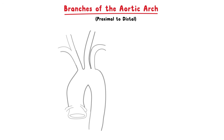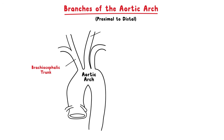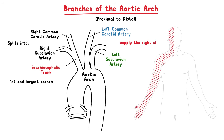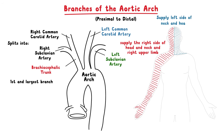There are three major branches which arise from the aortic arch. Proximal to distal, these are the brachiocephalic trunk, the left common carotid artery, and the left subclavian artery. The brachiocephalic trunk is the first and largest branch of the aortic arch; it ascends laterally and splits into the right common carotid artery and the right subclavian artery, supplying the right side of the head, neck, and the right upper limb. The left common carotid artery ascends up the neck and supplies the left side of the neck and head. The left subclavian artery supplies the left upper limb.